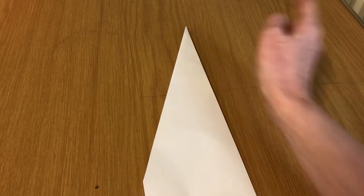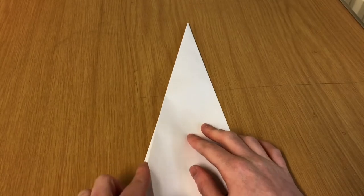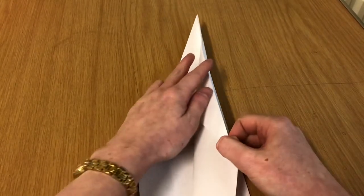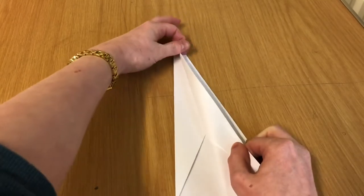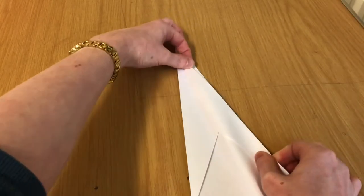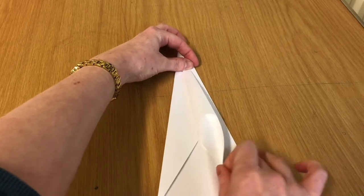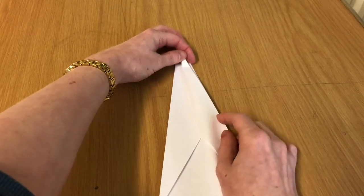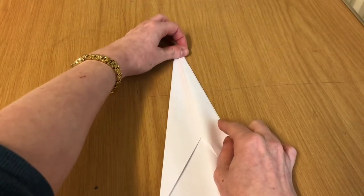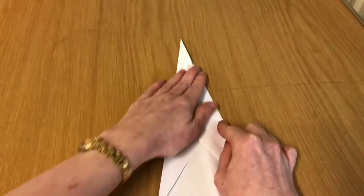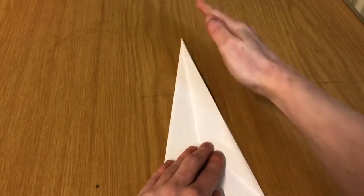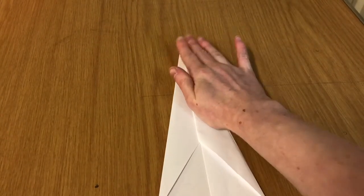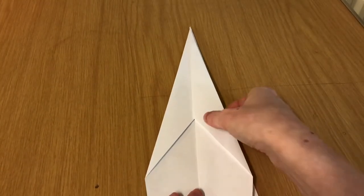Taking this corner, you're going to fold it down. It gets a little bit more tricky. Fold it down so it's in line with that bottom line, and then you're going to press really firmly down.